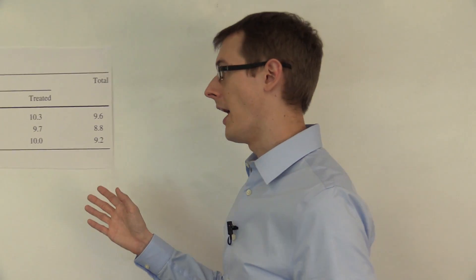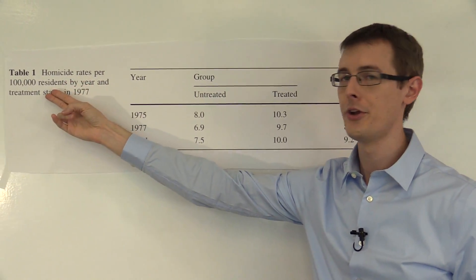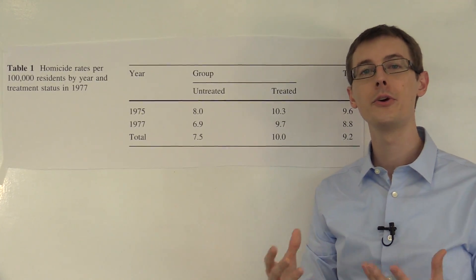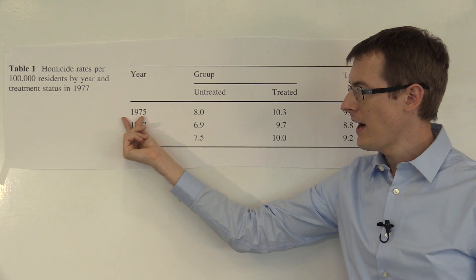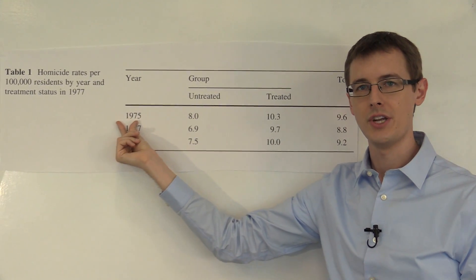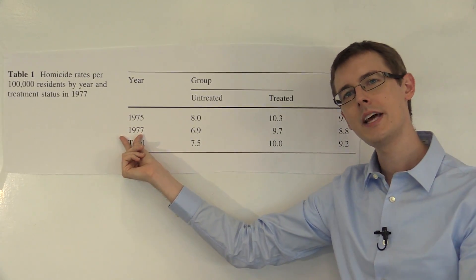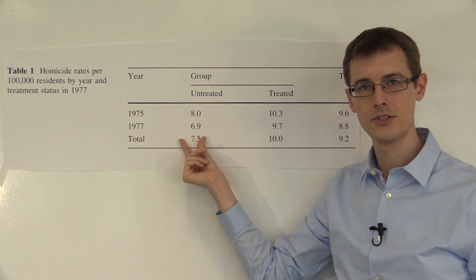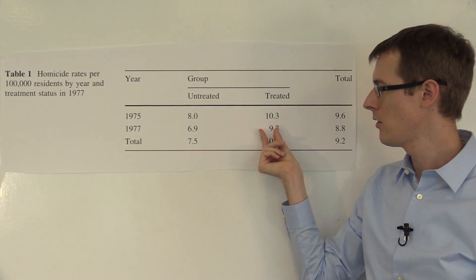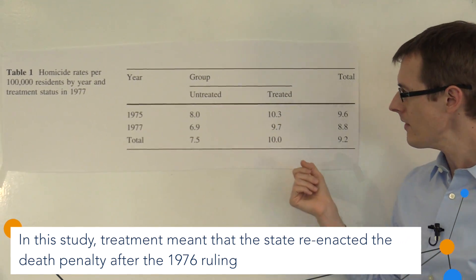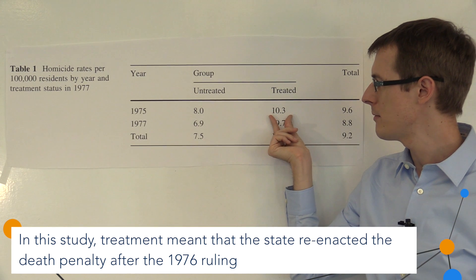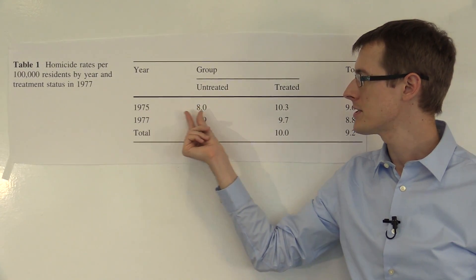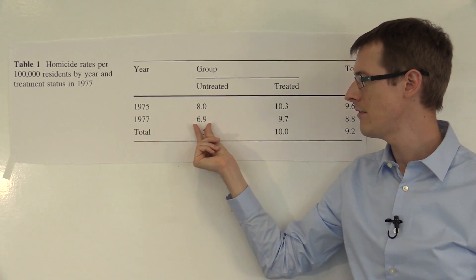So here's the data we've got. Our outcome variable is homicide rates per 100,000 residents. Our treatment variable is whether a state has the death penalty or not, so our units of analysis are states. In 1975, the death penalty was illegal in every single state. In 1977, it was legal in some states and not others. The untreated states are where it was illegal in both years. The treated states are where the death penalty was legal in 1977 and illegal in 1975. For the treated states, the homicide rate in 1975 was 10.3 and in 1977 it was 9.7. In the untreated states, the homicide rate in 1975 was 8.0 and in 1977 it was 6.9.